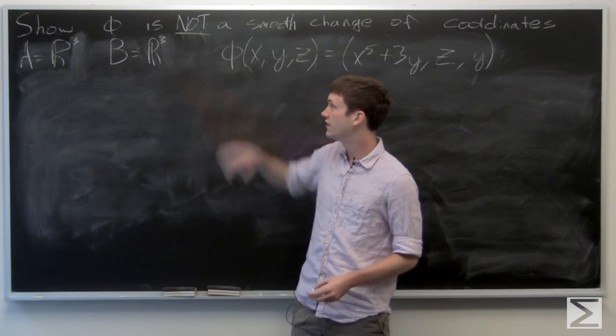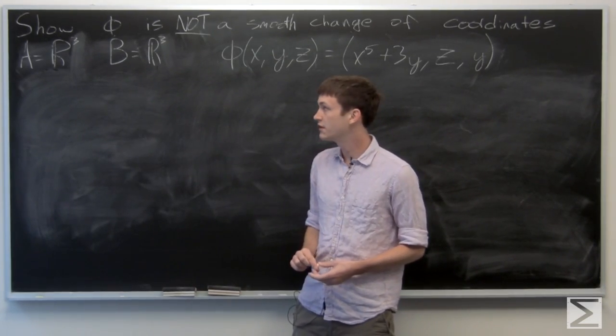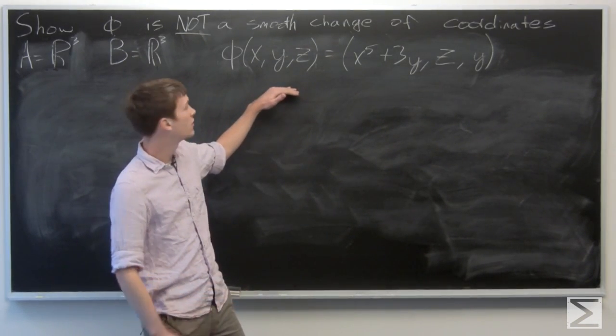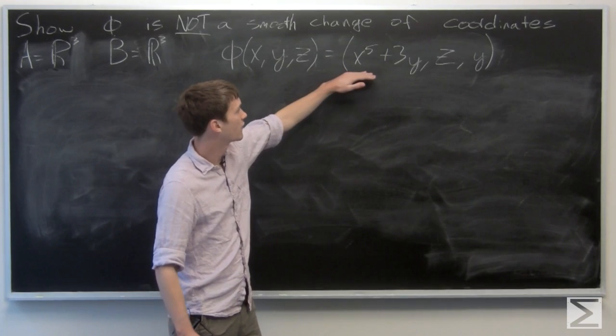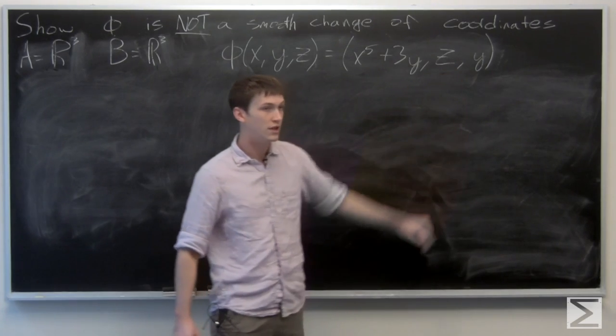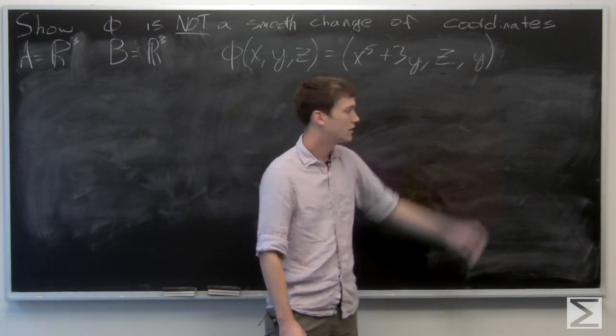In this problem, we're asked to show that phi is not a smooth change of coordinates, where phi is a function from R³ to R³ defined by the first component is x to the fifth plus 3y, the second component is z, and the third component is y.